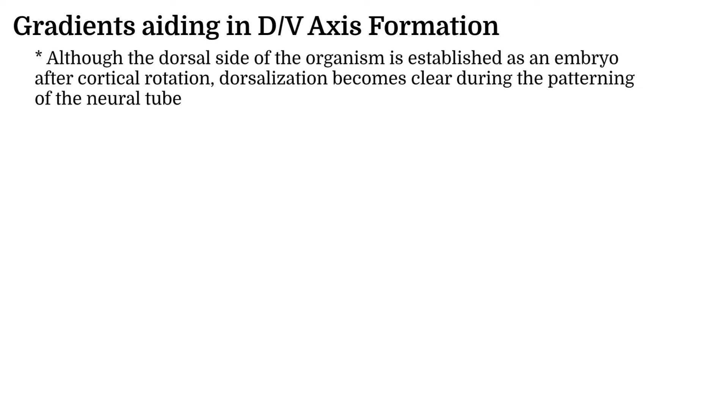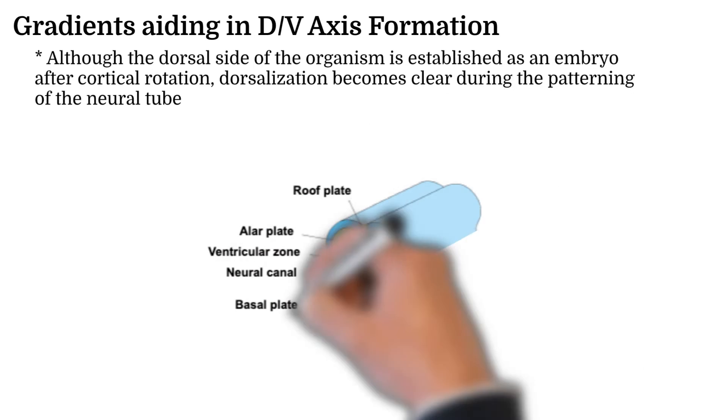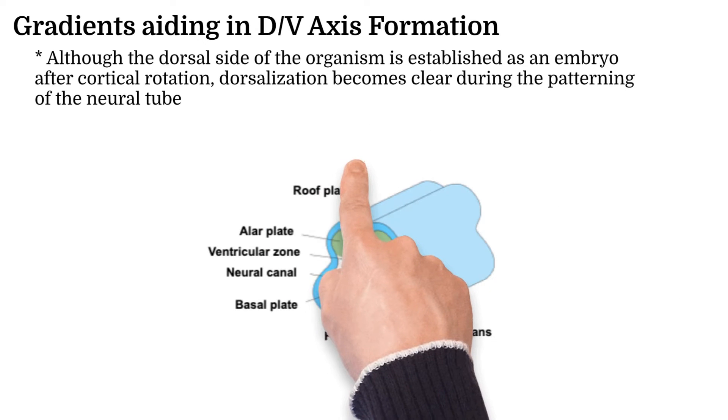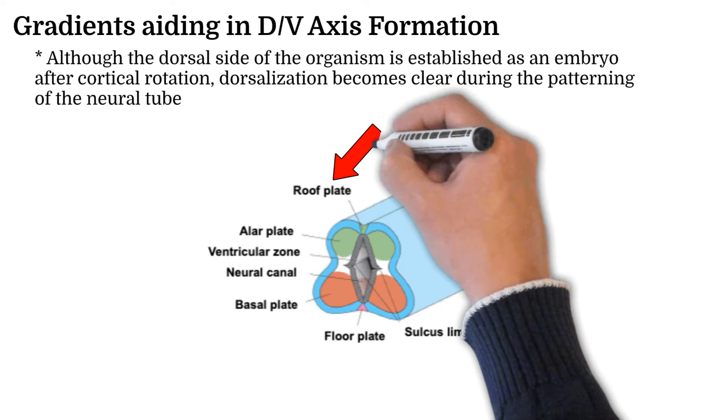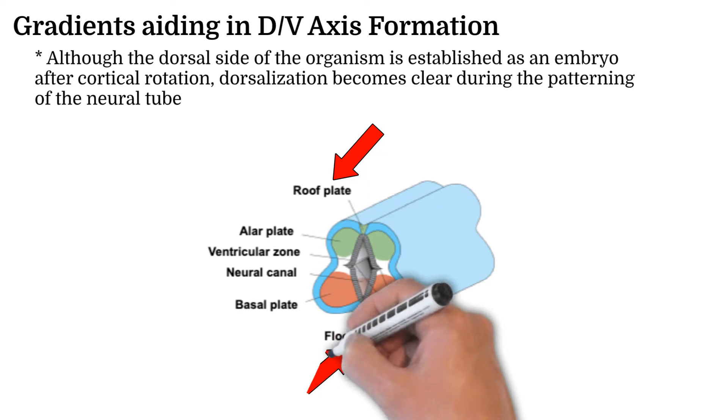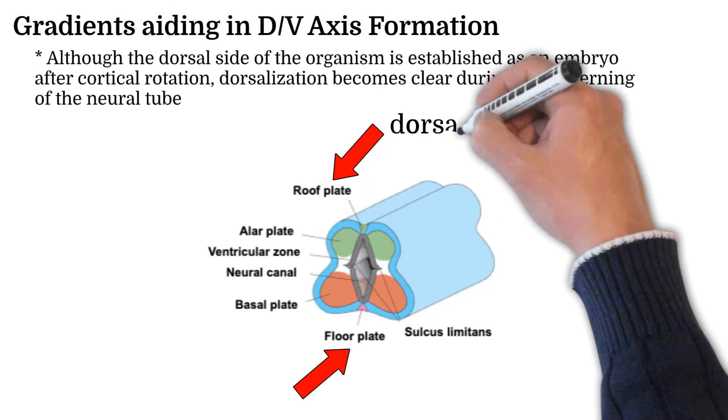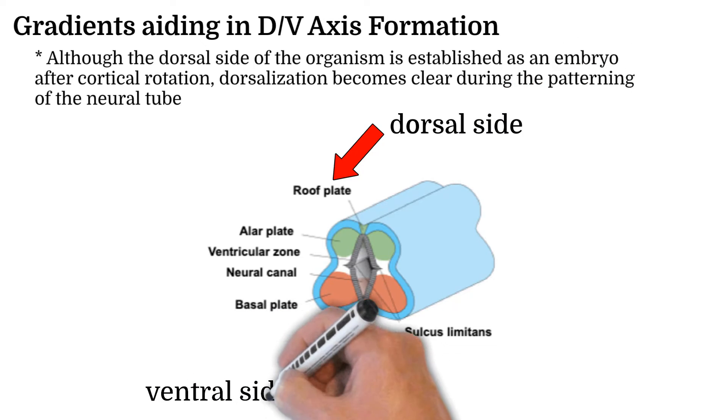Further down the line of development, a key part of dorsalization occurs when each side of the neural tube along the dorsal ventral axis gets specified with a roof plate and a floor plate, the former along the dorsal side and the latter along the ventral side.